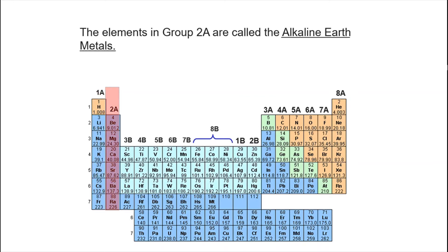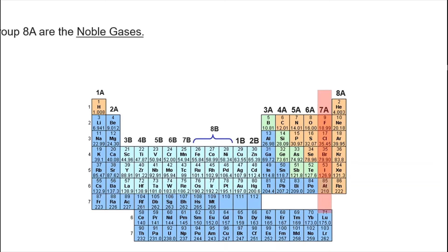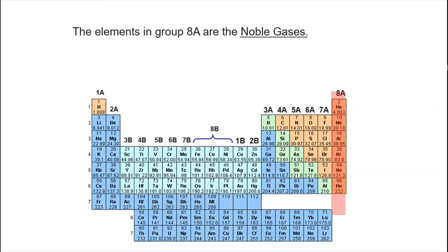The elements in group 2A are called the alkaline earth metals. The elements in group 7A are called the halogens. And the elements in group 8A are called the noble gases.